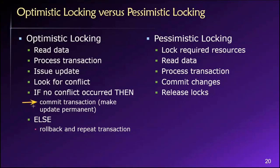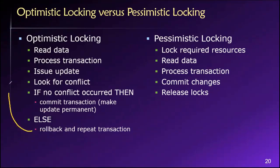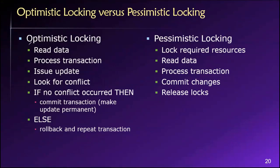We make those changes a permanent part of the database and then our transaction has successfully completed. There's a loop built in here — if a conflict occurs, we loop back and do it again. You can see how the assumption we're making is critical to determining if optimistic locking will actually deliver a performance improvement for us.